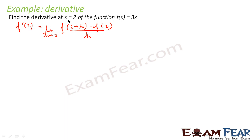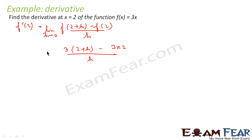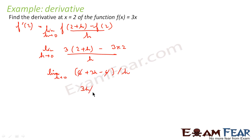f'(2) is the derivative of f(x) at x=2, and that value is the limit of f(2+h) minus f(2) by h. We will put the values: f(2+h) is nothing but 3 into (2+h), because f(x)=3x, so x=2+h. This becomes 3(2+h) minus f(2)=3(2), all over h, as h tends to 0. This is 6+3h minus 6 by h, which simplifies to the limit of 3 as h tends to 0. That is nothing but 3. So 3 is the answer.